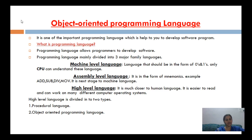What is machine level language? Machine level language is in the form of zeros and ones, and it is only understood by the CPU. Humans cannot understand it because it is in bit format — zeros and ones.